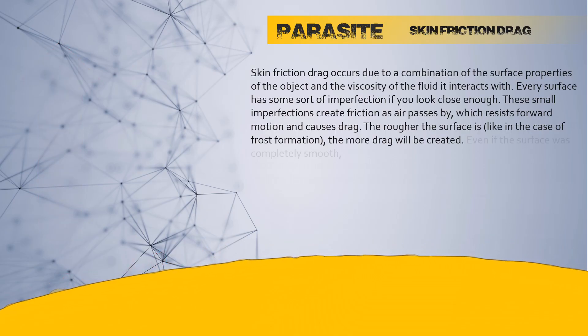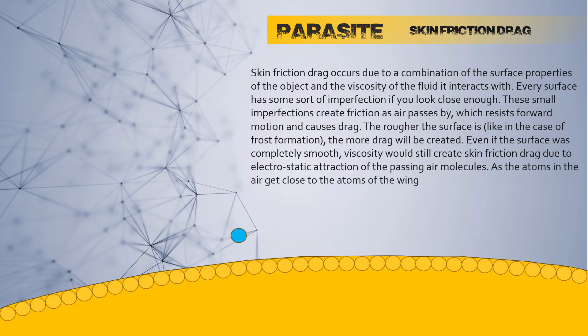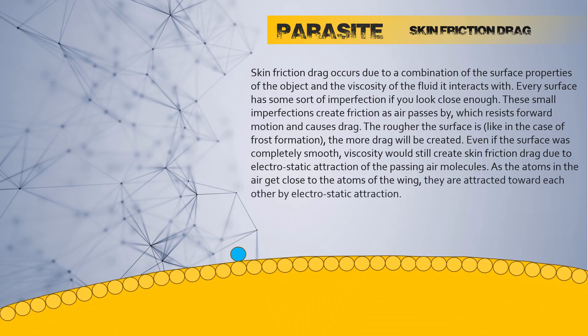Even if the surface was completely smooth, viscosity would still create skin friction drag due to the electrostatic attraction of the passing air molecules. As the atoms of the air get close to the atoms of the wing, they are attracted towards each other by electrostatic attraction.